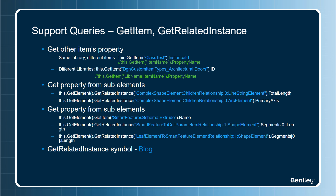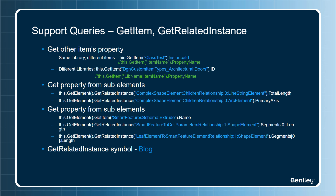These are some complex functions. Use the Get Item function to get the property of the same library or different libraries. Use the Get Related Instance function to get a property from sub-elements. You will need to know the element relationship and understand relationship classes. There is a good blog explaining how to use the Get Related Instance function. Let's see the discussed functions in a demo.